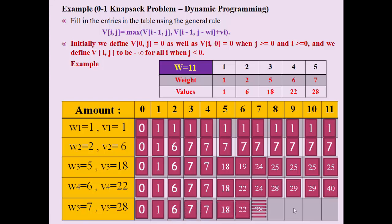We continue filling up to the last row and last column. The last row and last column cell is our answer. Our answer is 40, indicating the maximum possible value of our knapsack is 40. Now let us implement this algorithm in C language.